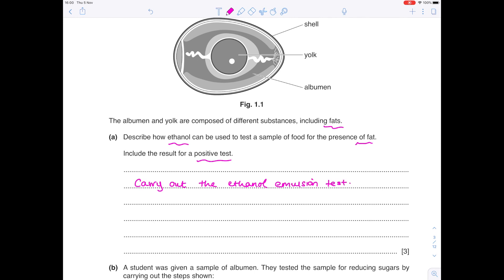Remember that in order to do that, you add your sample to a test tube containing ethanol and water. And then you have to shake it. If you have fat, then you'll see a milky white suspension. And that's obviously your positive result.